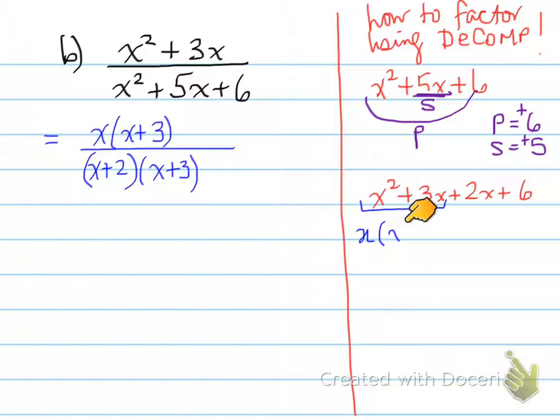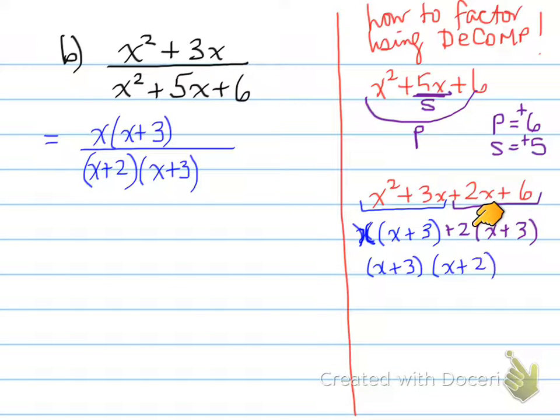Now, what we do is we take the first two pieces and we common factor out the x to give us x(x+3). In the second piece, we common factor a 2, a plus 2 out of it, and we get +2(x+3). So now this is what we've done thus far. What you'll notice is there's an (x+3) in both pieces. So we take out (x+3), we're left with (x+2). And now these are the factors that you would put underneath. Please do not ever show decomposition within a question. It is to be done on the side, not within the question.